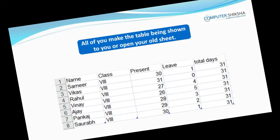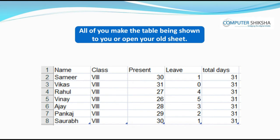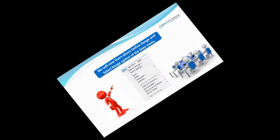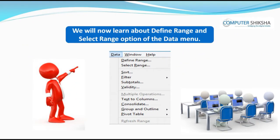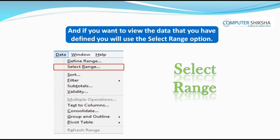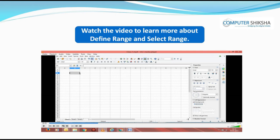Go ahead and make the table being shown to you or open an existing saved calc file. We will now learn about define range and select range options of the data menu. Using define range, you can select any part of the table which you need to use repeatedly. And if you want to view the data that you have defined, you will use the select range option.